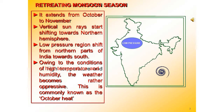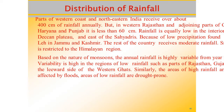Parts of the western coast and northeast India receive over 400 cm of rainfall annually, but it is less in western Rajasthan. In western Rajasthan and some parts of Gujarat, Haryana and Punjab, they get less than 60 cm of rainfall. Rainfall is equally low in the interior parts of the Deccan Plateau and east of the Sahyadris. A third area of low precipitation is around Leh in Jammu and Kashmir. The rest of the country receives moderate rainfall.